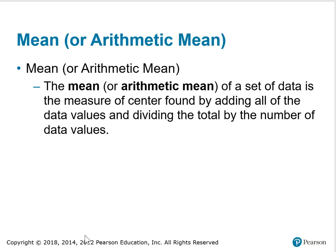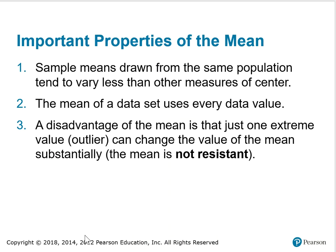The mean, or arithmetic mean, of a set of data is the measure of center found by adding all the data values and dividing the total by the number of data values. Important properties of the mean: Sample means drawn from the same population tend to vary less than other measures of center. The mean of a data set uses every data value. A disadvantage of the mean is that just one extreme value or outlier can change the value of the mean substantially. The mean is not resistant.